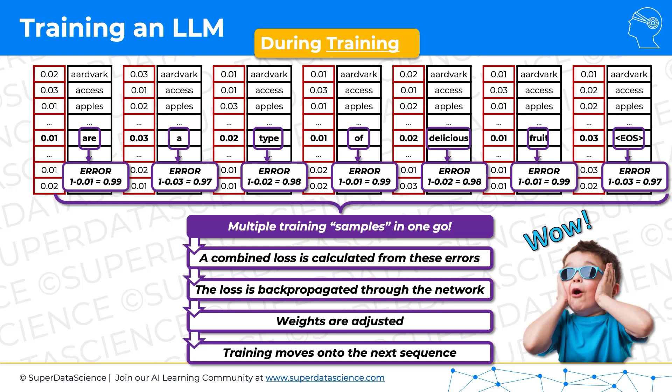How crazy is that? This is the power of transformers — they're so efficient. You give them seven words, and instead of seeing one sample, they see seven samples. The transformer sees seven samples. And imagine if you give them a thousand words — there'll be a thousand samples in one go. And this all happens as matrix operations, so it all happens in parallel. It's not sequential training — this is all trained in parallel, all these errors are calculated in parallel. Then the combined loss is calculated and backpropagated.